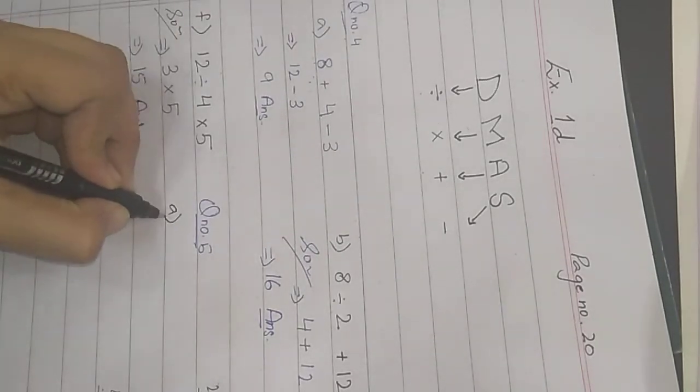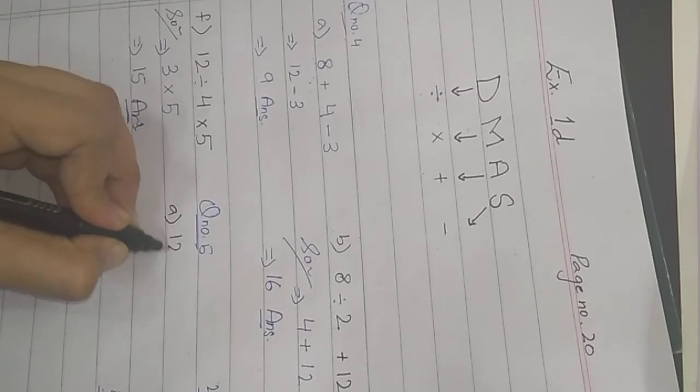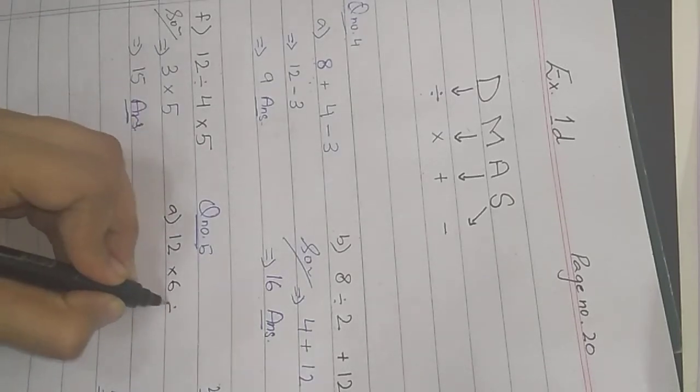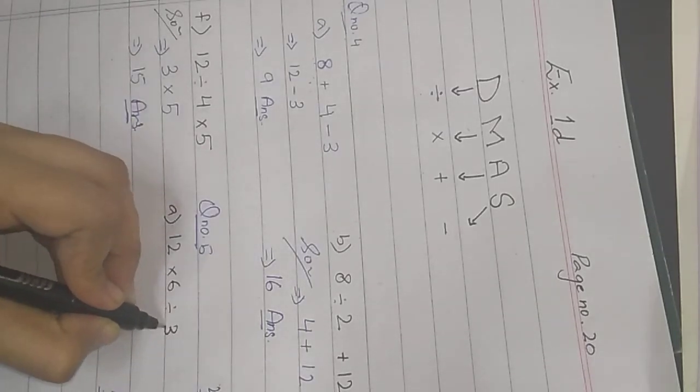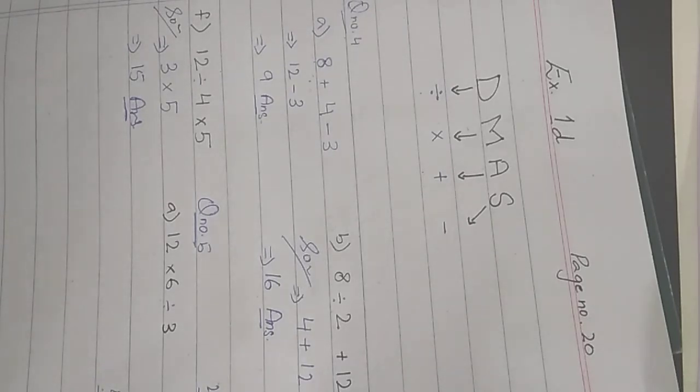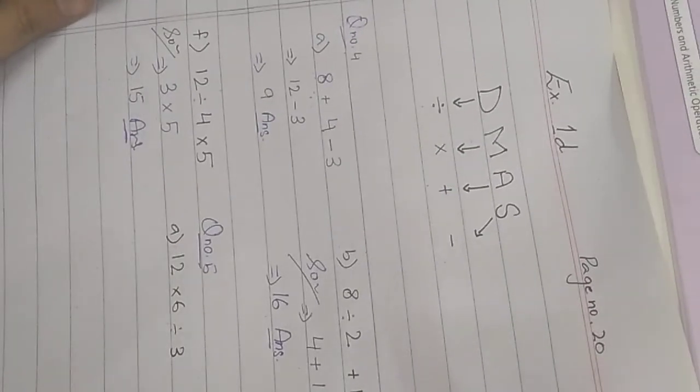Let's start with part a. Part a is 12 multiplied by 6 divided by 3. So first, definitely we have to solve with divide sign.